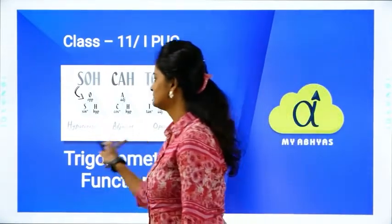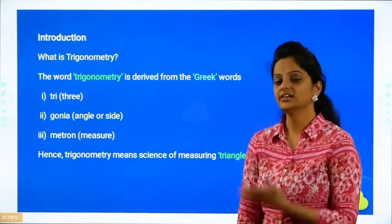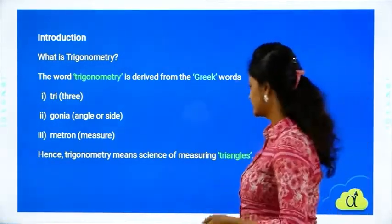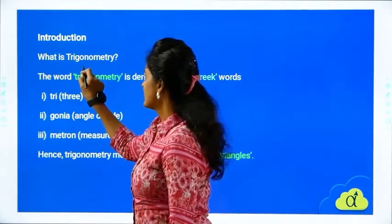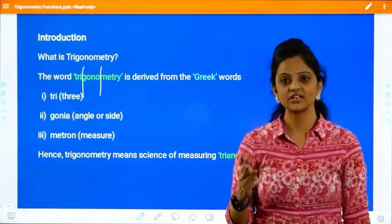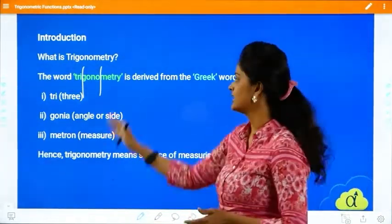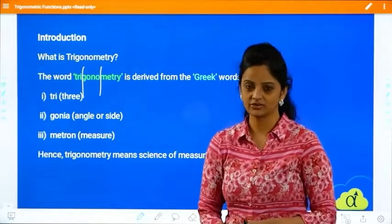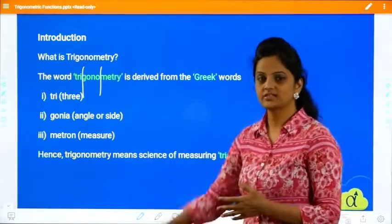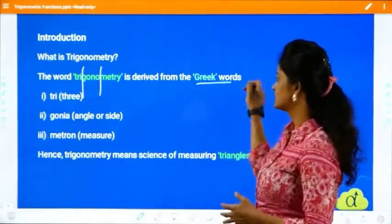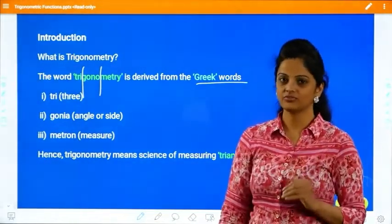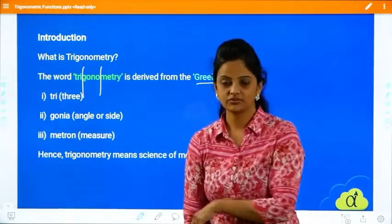Let us start this chapter by knowing what it actually is. Trigonometry, as you all know, is a Greek word and that is divided as 'tri' meaning three, 'gon' meaning angle, and 'metry' meaning measurement. So trigonometry is a three-angle measurement. We know that it is a Greek word and that is how trigonometry is used in day-to-day life also.